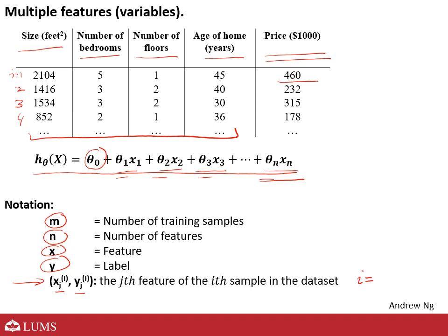For example, if i is equal to two and j is equal to three, then j values here are j=1, 2, 3, and 4. For i equals two, j equals three, I am going to reach the number of floors in the second training sample. So hopefully this notation will be clear to you.